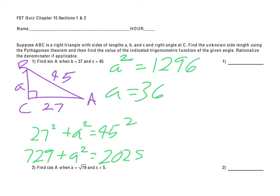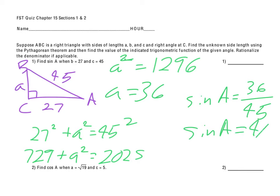The sine of angle A would be the opposite side, which is A — the 36 — over the hypotenuse 45. Of course, we want to reduce that. There's a common factor of 9, so we end up with 4/5 for the sine of A.